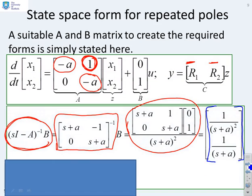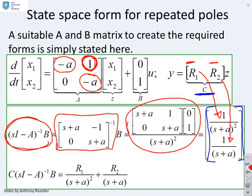So by using this particular definition of A, I have managed to get a Laplace transform that has this pole in its quadratic form and in the single form. Now, if I just look on the previous page and remind you of what I was looking for, I was looking for R2 over s plus a squared and R1 over s plus a. So now, with this particular choice of C, then this R1 is going to go with this term, and this R2 is going to go with this term. So what you're going to end up with is R1 over s plus a squared and R2 over s plus a.